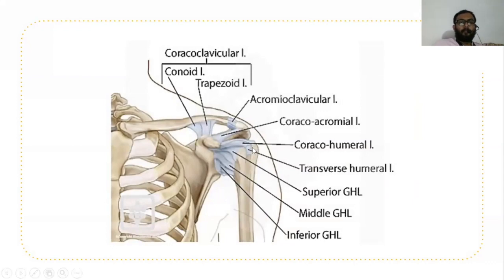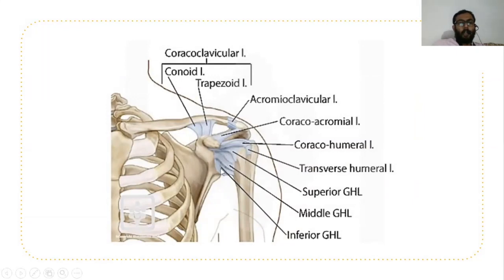This includes the ligaments of the shoulder joint. Here you can see the conoid ligament and trapezoid ligament, which are the coraco-clavicular ligaments. These two ligaments are important when discussing acromioclavicular joint subluxation. There is also the acromioclavicular ligament, the coraco-acromial ligament — which prevents superior displacement of the head of the humerus — the coraco-humeral ligament, transverse humeral ligament, and the superior, middle, and inferior glenohumeral ligaments.